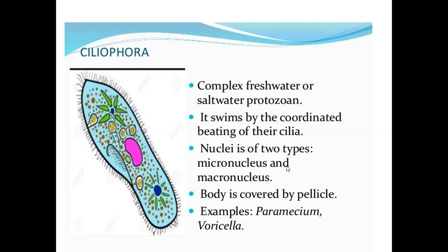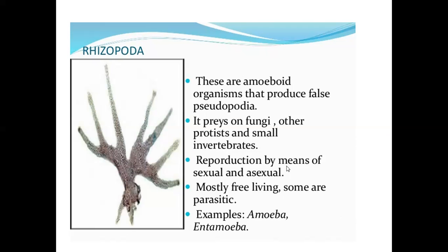This is the figure showing the ciliate with contractile vacuoles, food vacuoles, micronucleus, oral groove, mouth, gullet, anal pore, and cilia. Third is the Ciliophora complex — freshwater or saltwater protozoans that move by the coordinated beating of their cilia. Nuclei are of two types: micronucleus and macronucleus. The body is covered by a pellicle. Example: Paramecium. Rhizopoda: these are amoeboid organisms that produce false pseudopodia.